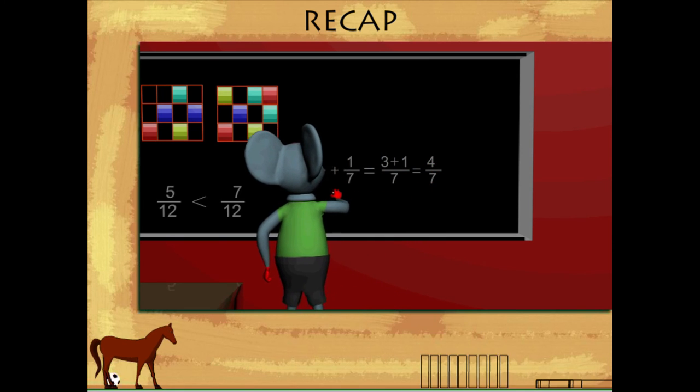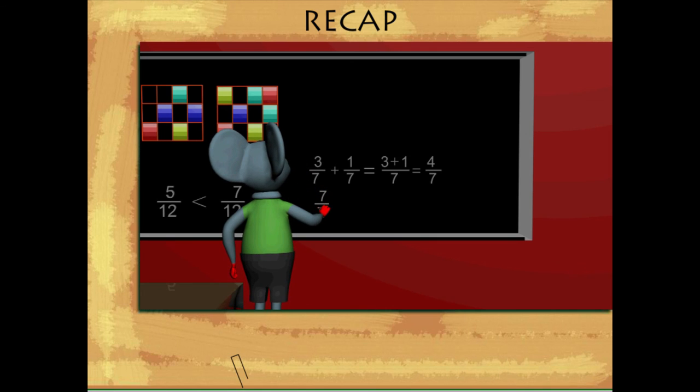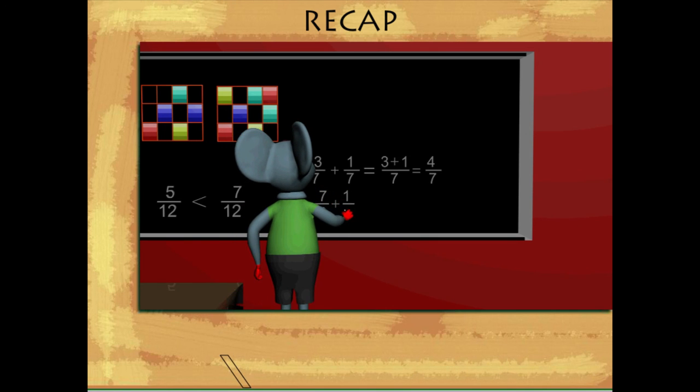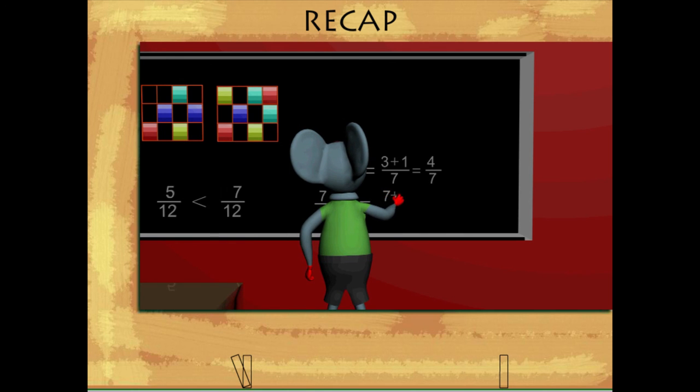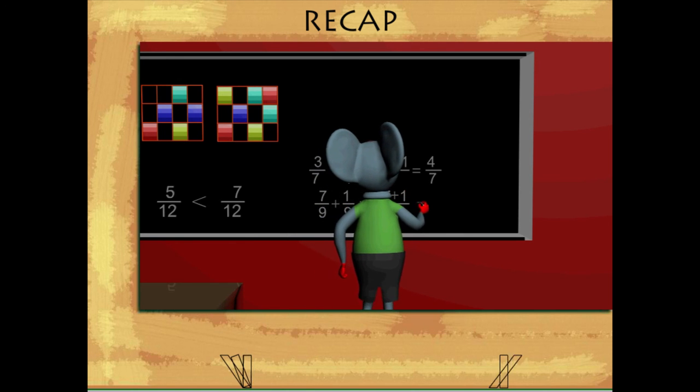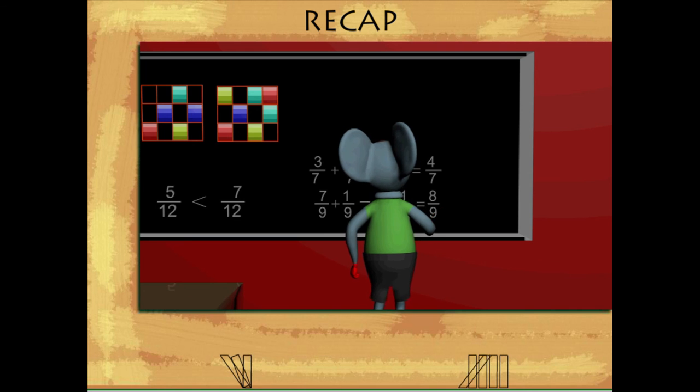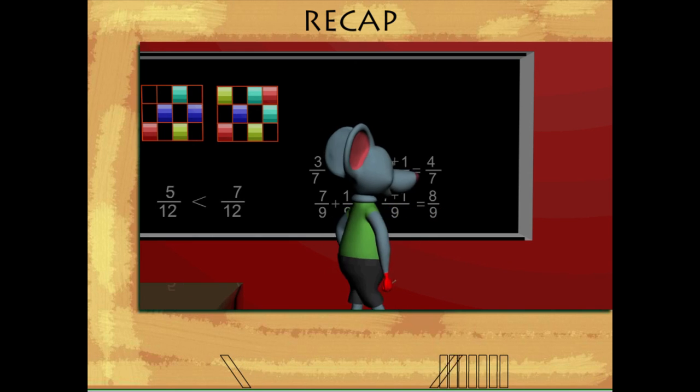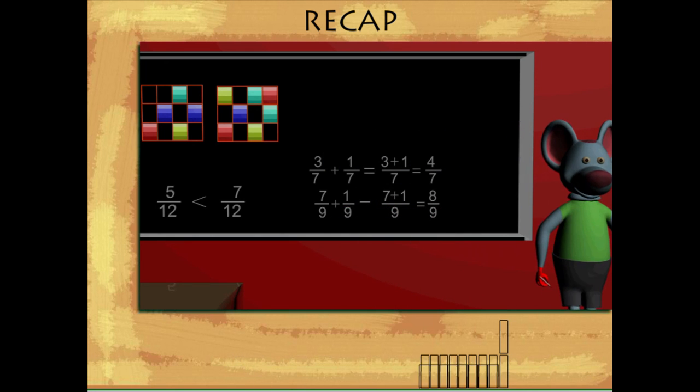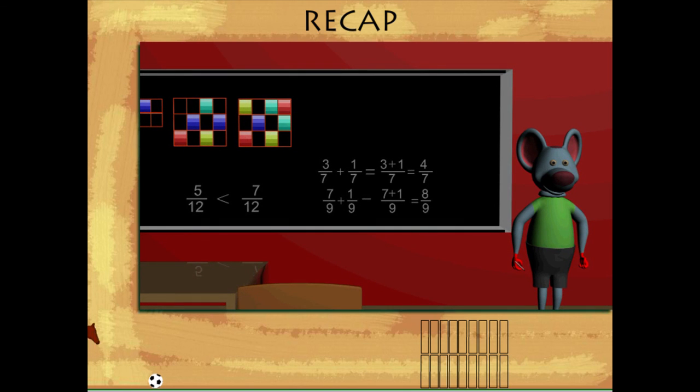Similarly, seven by nine plus one by nine equals seven plus one by nine, or eight by nine. Like fractions can be added like this. Good revision, Toby!